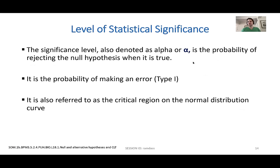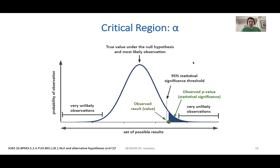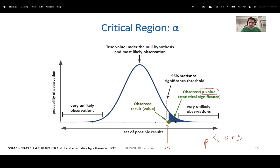A type one error is the same as having an alpha error, which is a false positive. If the P value falls less than 0.05 — say 0.04 — we can say this is statistically significant. We accept the alternative hypothesis and reject the null. The P value is generated for your statistical test to tell you what your confidence is. It's not saying the null hypothesis is necessarily true; it's saying you can't reject it.